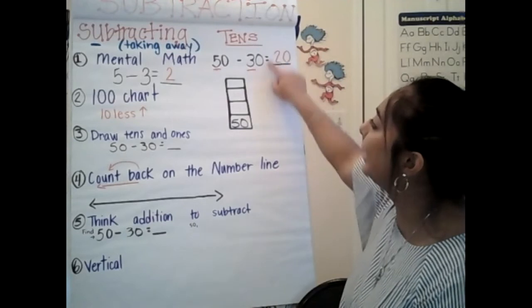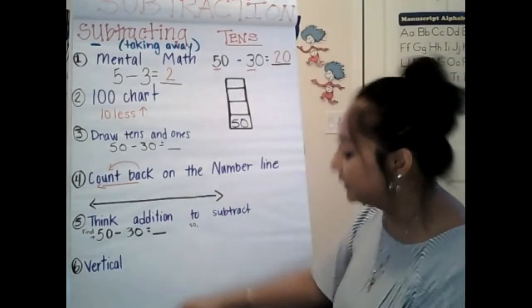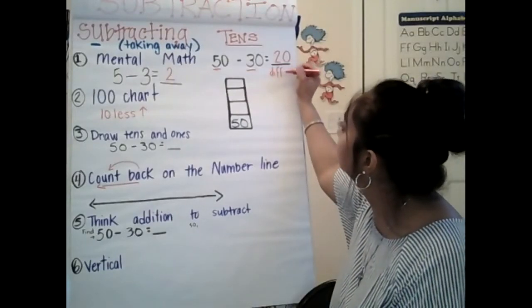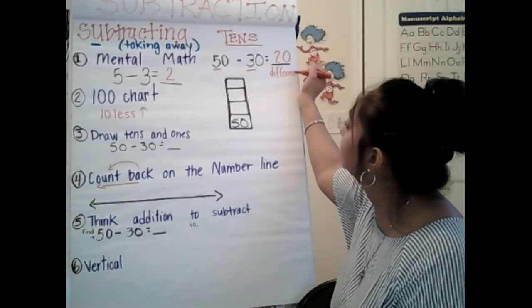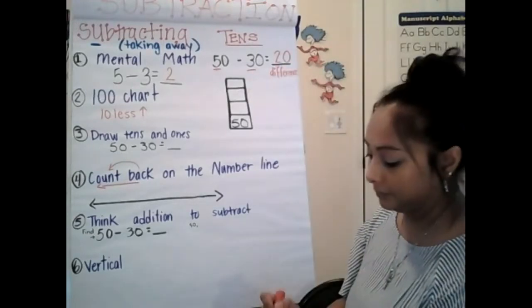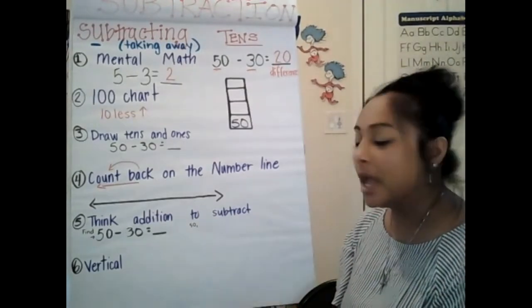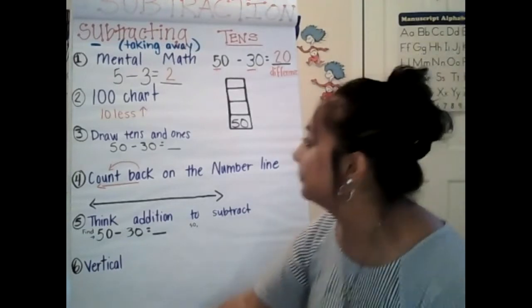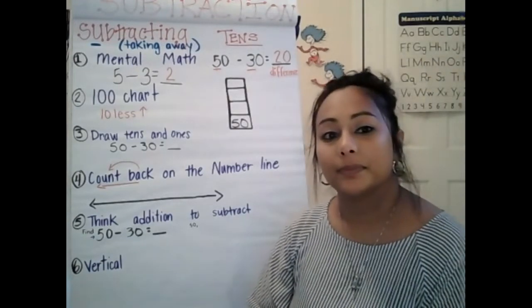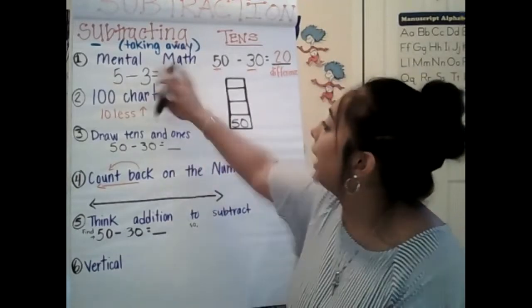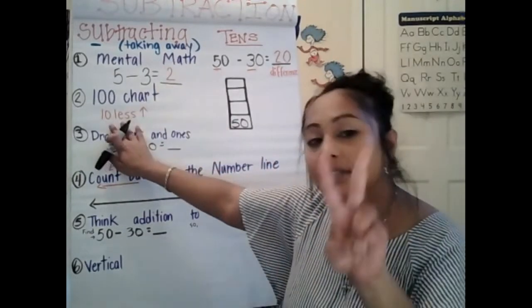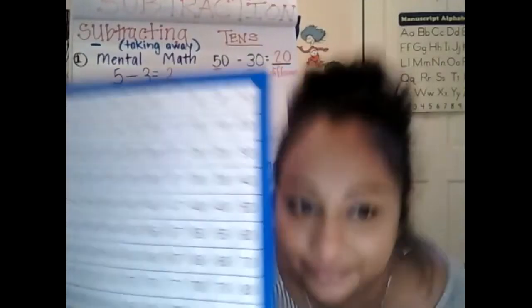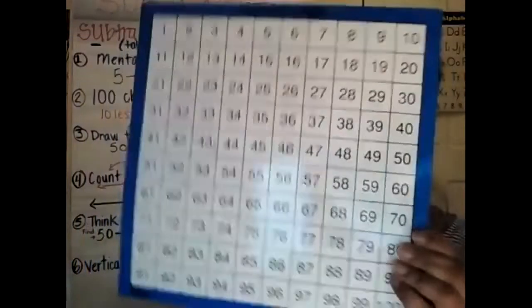Remember, when we get an answer for a subtracting problem, that is called the difference. Cuando tenemos una respuesta para cuando estamos restando, eso se llama la diferencia — difference. When we're adding it's called the sum; when we're subtracting it's called the difference. Y cuando agregamos, se llama la suma — sum. That was mental math. The second strategy we talked about was using the hundreds chart. La segunda estrategia que usamos era usando la tarjeta de cien.